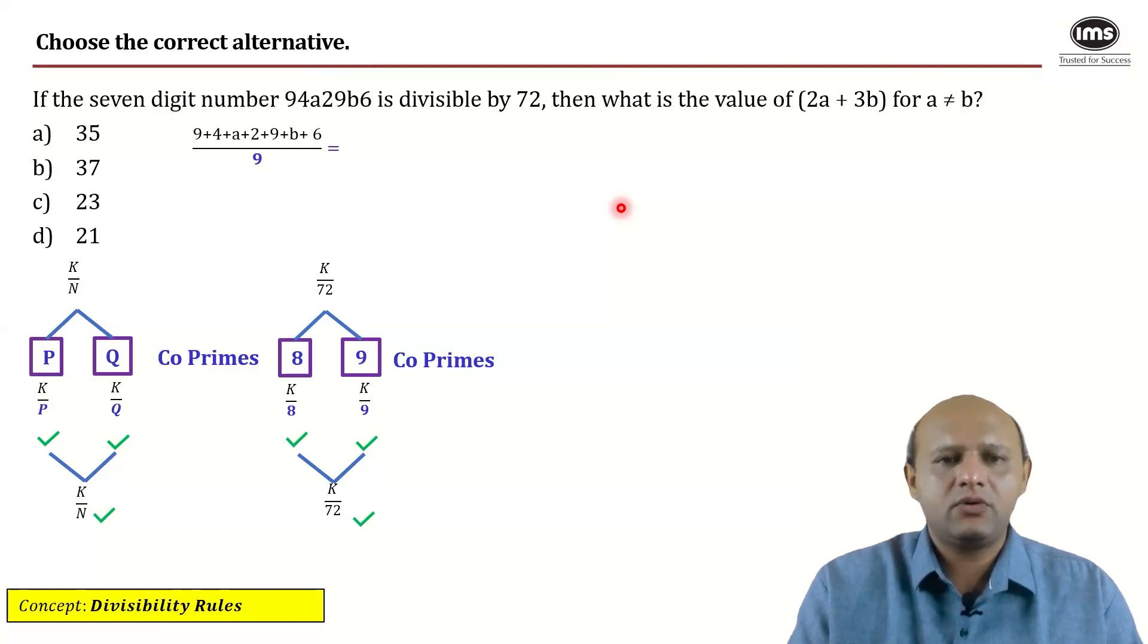It says that add the sum of digits. What is the sum of digits? 9 plus 4, 13. 13 plus 2, 15 plus 9, 24 plus 6 is 30. 30 plus A plus B by 9. Now pause here. Hang on. Now when you reach 30 plus A plus B, you must realize what is the next multiple of 9 after 30?